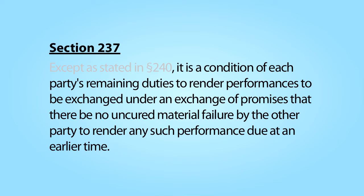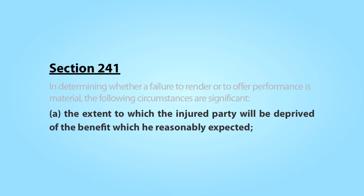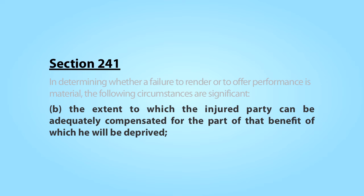Accordingly, for purposes of Section 237, the critical issue is when a breach is considered to be material. This issue is addressed in Section 241 of the Restatement. Subpart A embodies the concept of materiality that we have already explored in considering the doctrines of mistake and misrepresentation. A breach of promise is material if that breach affects the heart of the bargain — if the failure undermines the non-breaching party's achieving the very purposes and expectations that induced that party to enter into the contract in the first place. Subpart B suggests that if simple monetary damages can compensate the other party for the breach that occurred, that failure is less likely to be considered material.